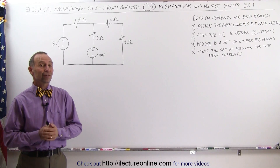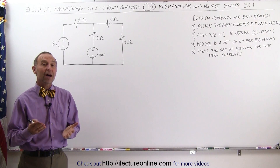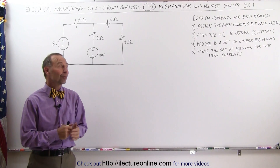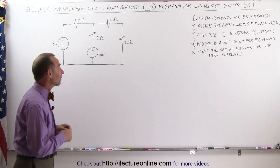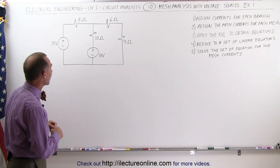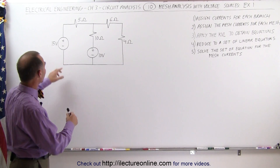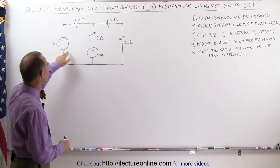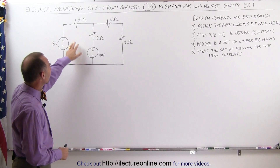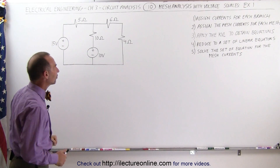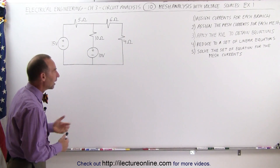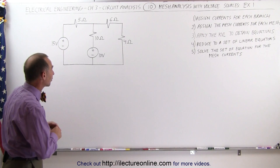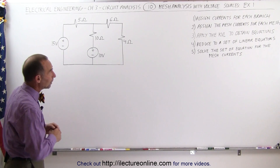Welcome to ElectronLine. Here's our first example of how to apply the mesh analysis method to a simple circuit. We have two voltage sources, 15 volts and 10 volts, and four resistors. How do we find the current and the voltages around this circuit?